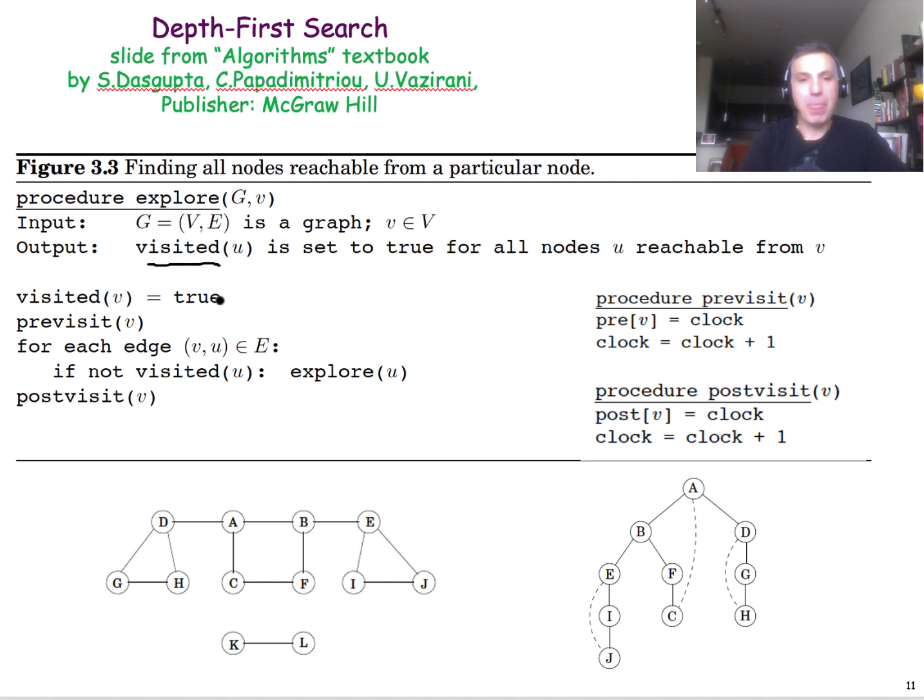Initially, we visit the starting node V, and then for every neighbor of V, for neighbor U, for instance, if we have not visited that node before, then we call this function recursively to visit that node.